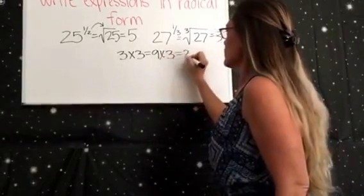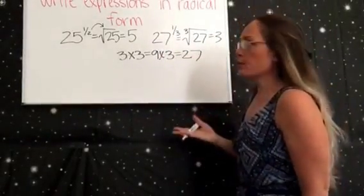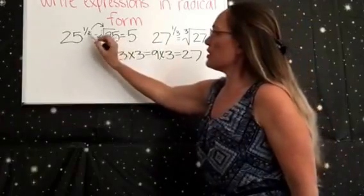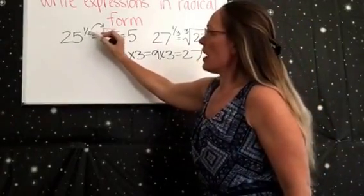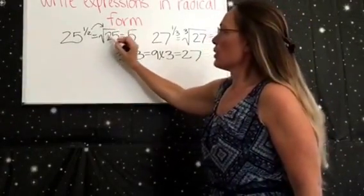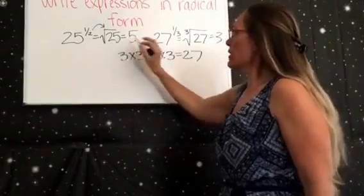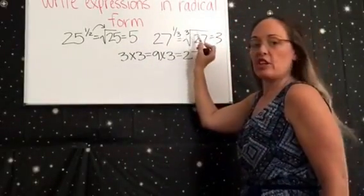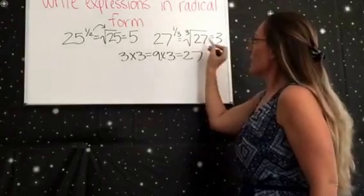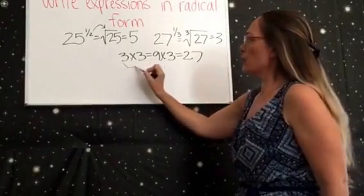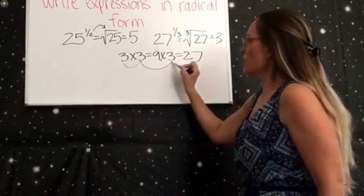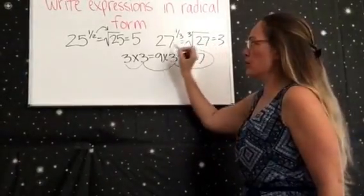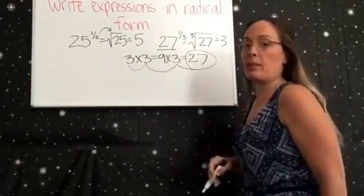And then when you see a 3 on the bottom, you have to square root it but find the cube, and then the cube is just a number that when you multiply it three times will give you the answer, which would be the original number.